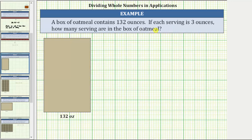To answer the question, we need to determine how many servings of three ounces are in 132 ounces or how many copies of three are in 132. Which means we need to divide 132 by three or determine the quotient of 132 and three.